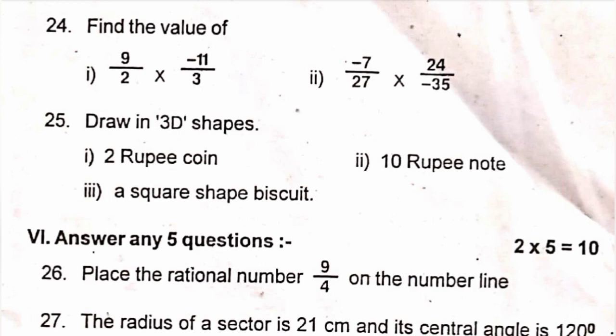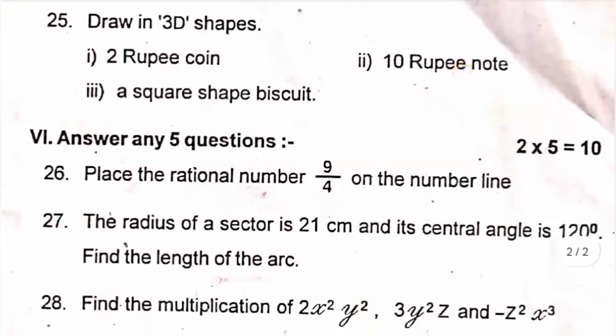Roman number 6, answer any 5 questions. 26, place the rational number 9 by 4 on the number line. Then 27th, the radius of a sector is 21 cm and its central angle is 120 degree. Find the length of the arc.